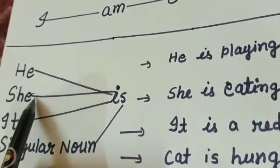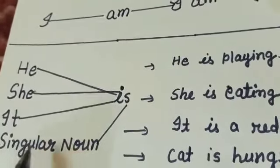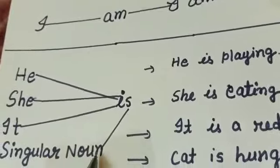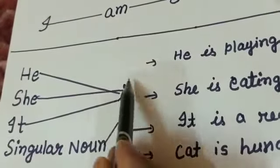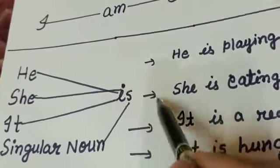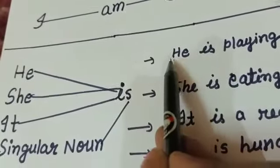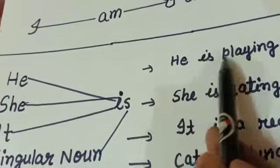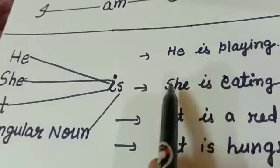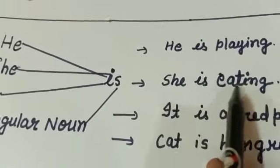He, she, it and all singular nouns, we use is. So we can write he is playing, she is eating.